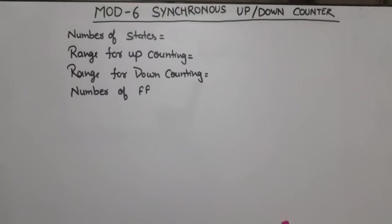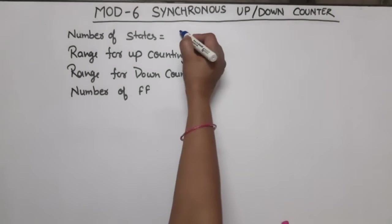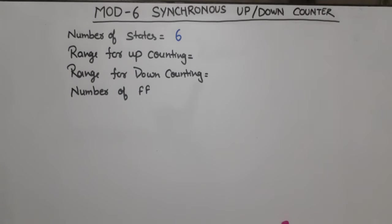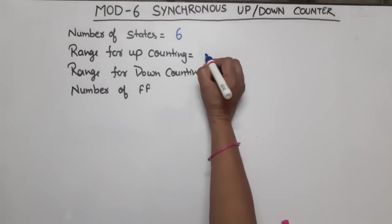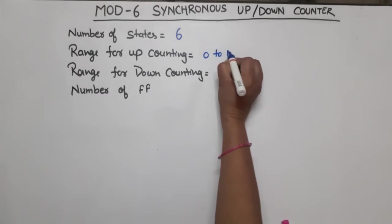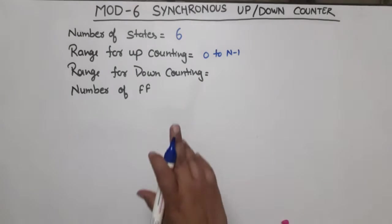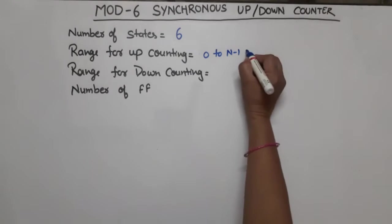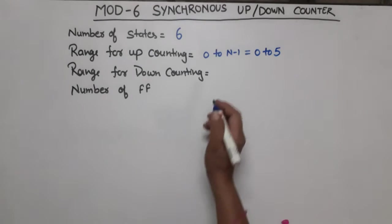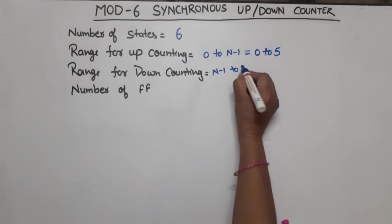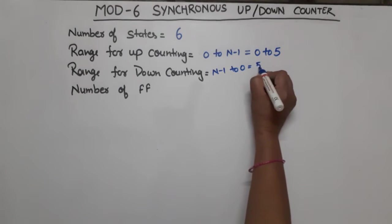Let's start. This is a mod 6 counter — how many states will it count? It will count 6 states. Its counting goes in up direction and down direction. For up counting, the range is 0 to N-1. In this case N is 6, so the counting range will be 0 to 5. For down counting the range will be N-1 to 0, which is 5 to 0.